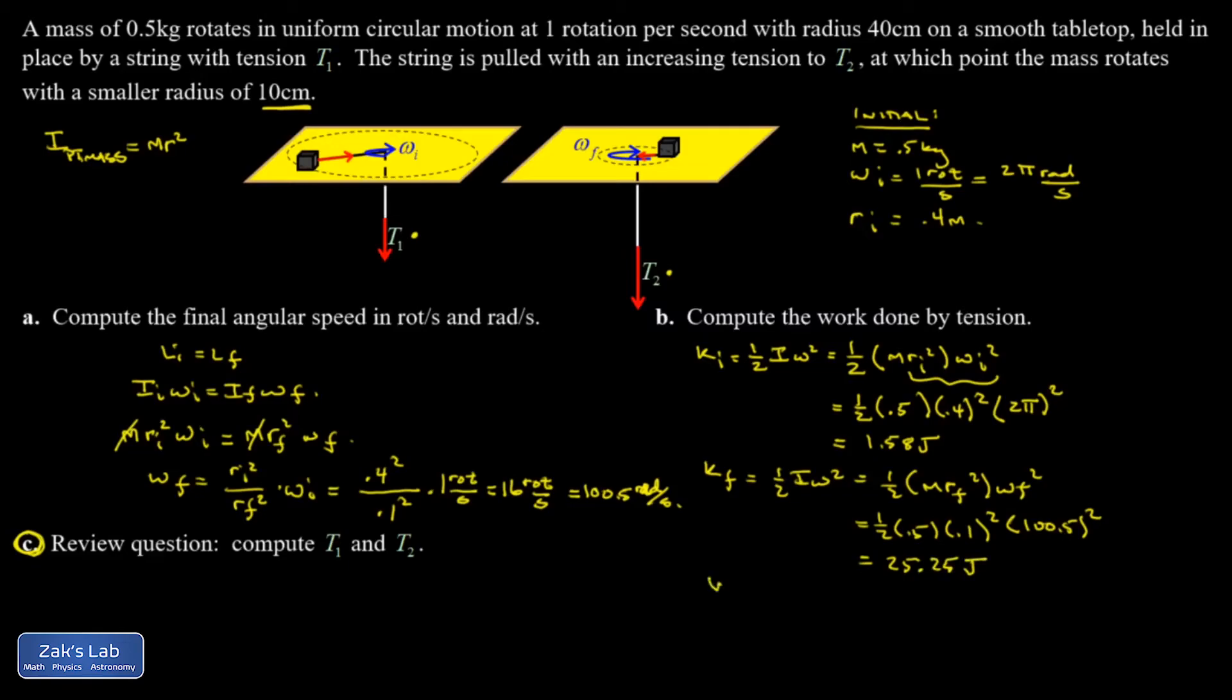Taking the difference and invoking the work energy theorem, if you want to be formal about it. How much work was done, you just look at how much kinetic energy increased. I get 23.7 joules of work. All right. So there's a conservation of angular momentum combined with energy problem.